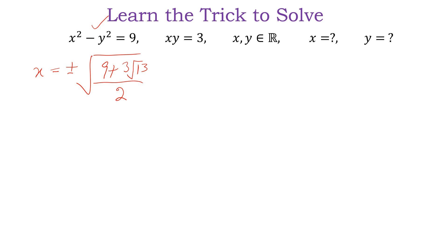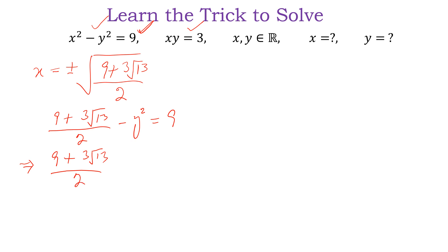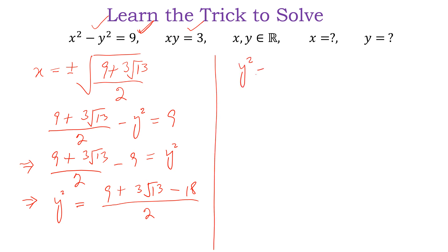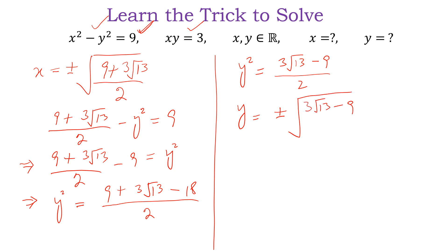Now we put this value of x squared into the first equation. So (9 plus 3 root 13) divided by 2 minus y squared equals 9, which gives y squared equals (9 plus 3 root 13) divided by 2 minus 9. Simplifying: y squared equals (9 plus 3 root 13 minus 18) divided by 2, so y squared equals (3 root 13 minus 9) divided by 2. Therefore y is equal to plus or minus the square root of (3 root 13 minus 9) divided by 2. This is the value of y and this is the value of x.